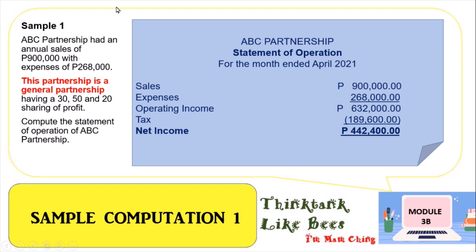Here is the income statement: sales of 900,000 minus 268,000 equals an operating income of 632,000. Because it is a general partnership, you first apply the 30 percent tax — so 632,000 multiplied by 30 percent gives a tax of 189,600. The net income of ABC Partnership is therefore 442,400, which will be distributed among the partners based on the 30, 50, and 20 percent ratios.